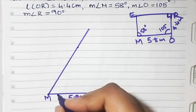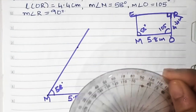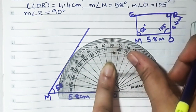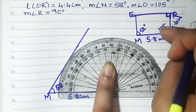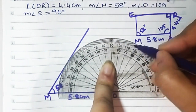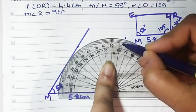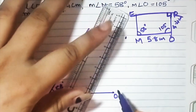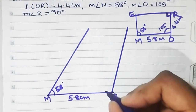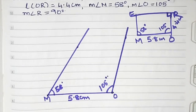Now angle O is 105°, which is obtuse. For an obtuse angle you cannot go on the inner side of 90° — you have to go on the outer side. At O, 105° means between 100 and 110. The slightly bigger line between 100 and 110 is 105, so we'll join that. This gives us angle O = 105°.